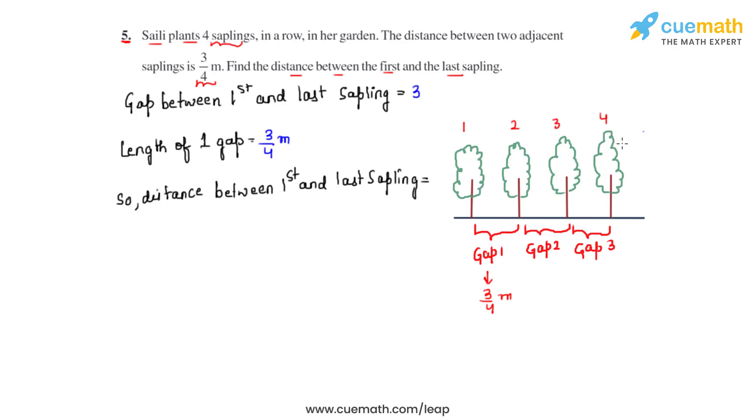So the distance between the first and the last sapling will be equal to the length of one gap which is 3 over 4 times the number of gaps that we have between the first and the last sapling which is 3. So our answer will be multiplying the numerators, 3 times 3 is 9 divided by 4.